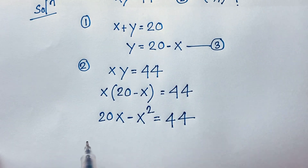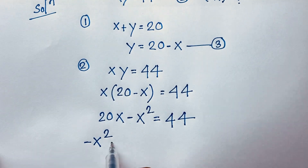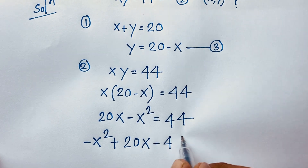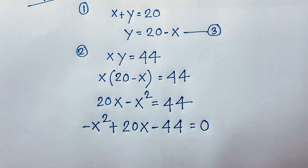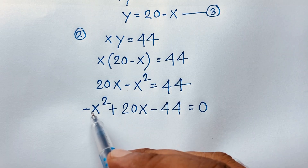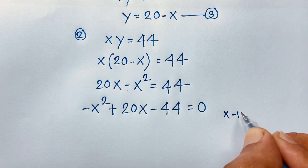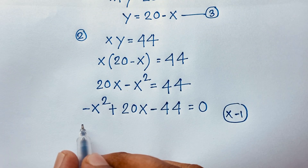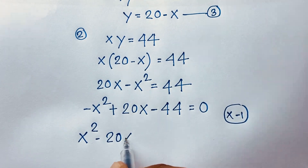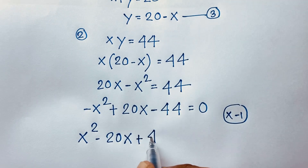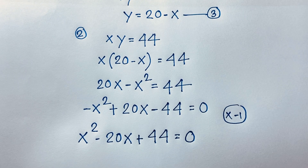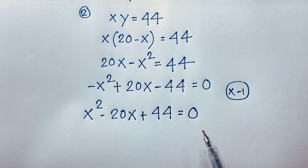Rearranging, we have negative x squared plus 20x minus 44 is equal to 0. Multiplying both sides by negative one gives us positive x squared minus 20x plus 44 is equal to 0. This is a nice quadratic equation.